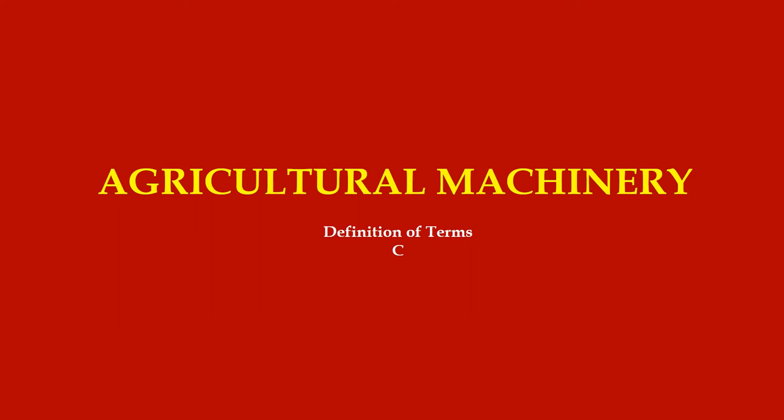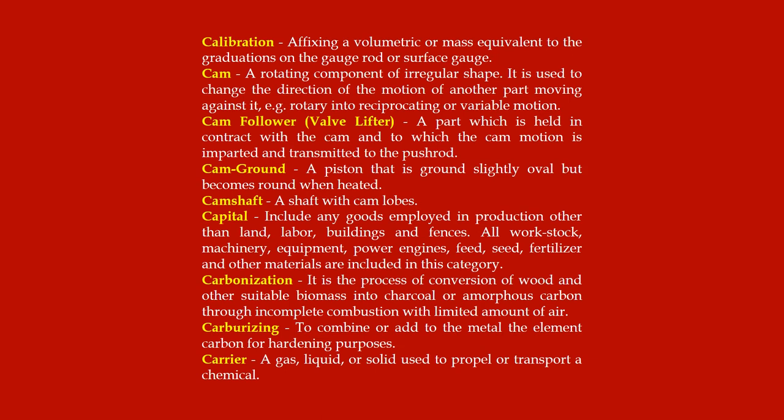Hello coffee beans. This is agricultural machinery definition of terms. Calibration: affixing a volumetric or mass equivalent to the graduations on the gauge rod or surface gauge. Cam: a rotating component of a regular shape used to change the direction of the motion of another part moving against it, example rotary into reciprocating or variable motion. Cam follower or valve lifter: a part which is held in contact with the cam, into which the cam motion is imparted and transmitted to the push rod.